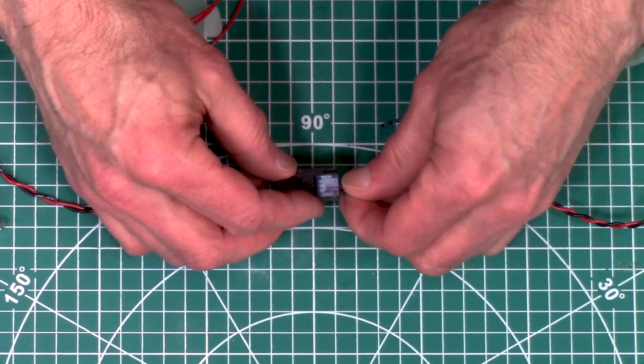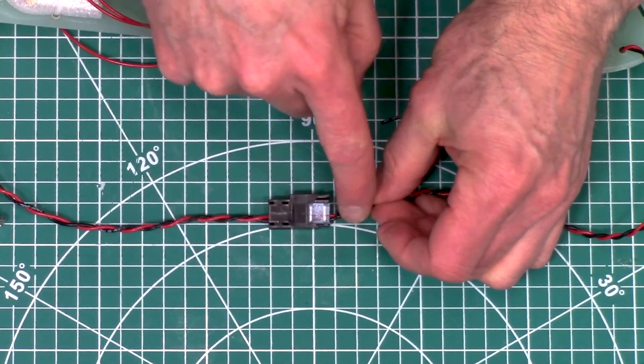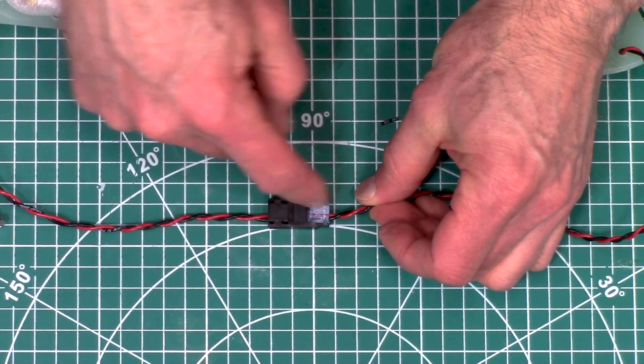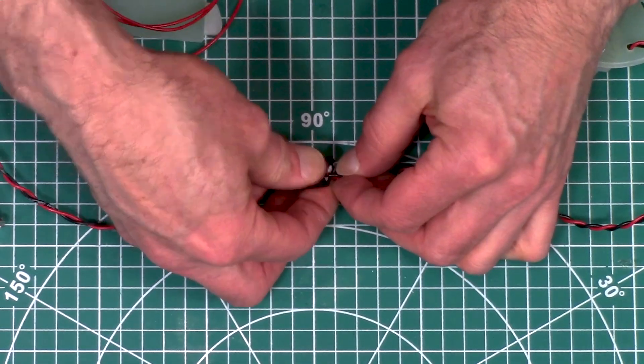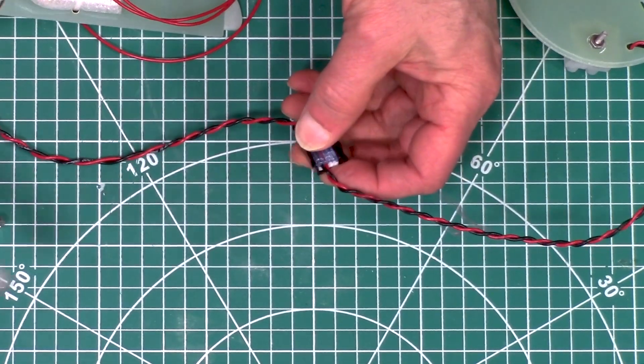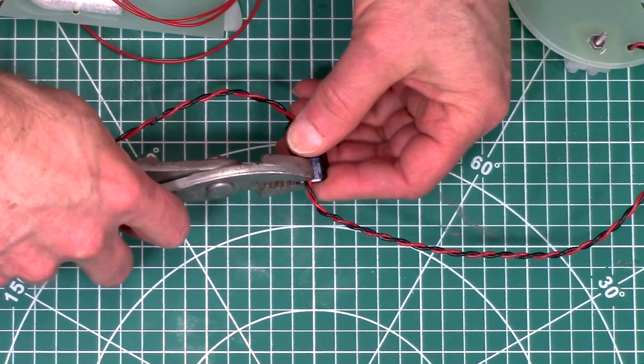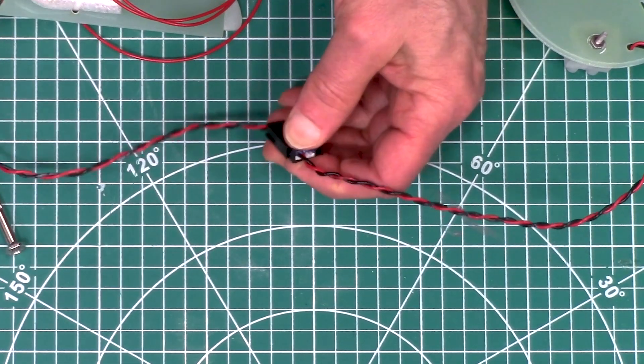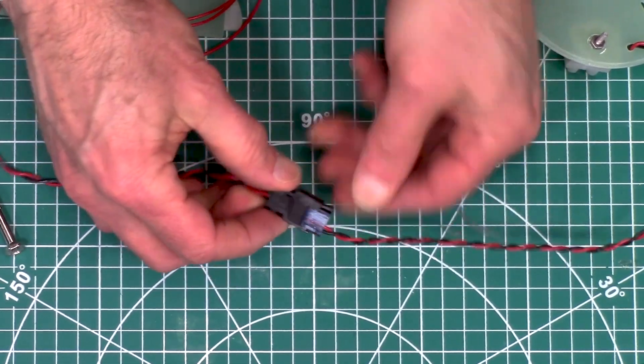They're not really polarity sensitive, but it makes sense, so I have black on the outside, red on the inside. Okay, just like that.